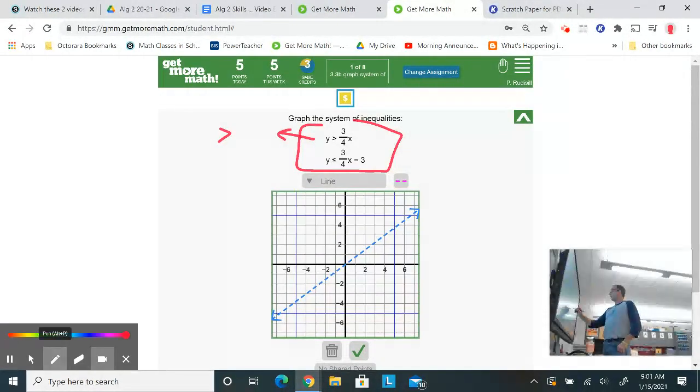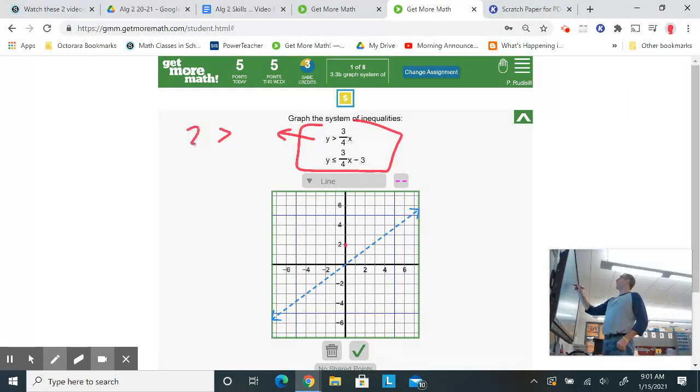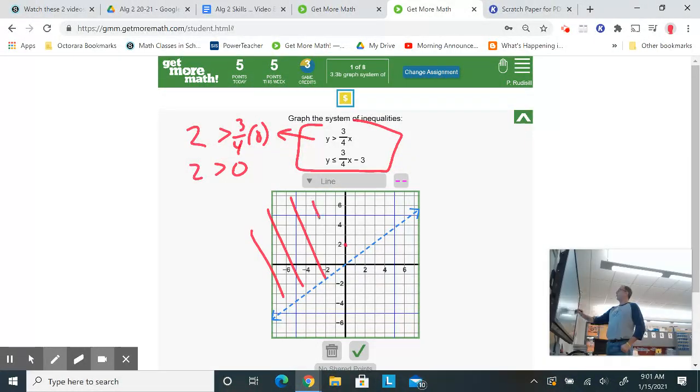Let's use one and one. Or, better yet, let's use, let's use zero, two, where x is zero, y is two. So I'll put a two where the y is, and a zero where the x is, so it's three-fourths times zero. So two is greater than zero. Of course it is. So I know I would shade this one going this way.